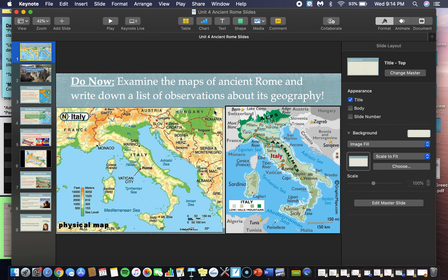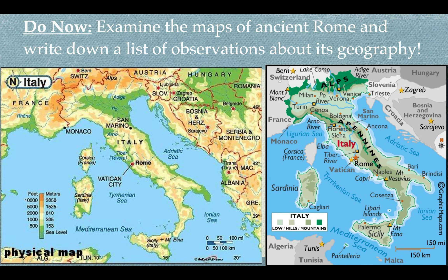Today we are starting our unit on ancient Rome. Before we get started, I want you to take a look at these two maps on the do-now slide. Ancient Rome is our last topic and it is located in a country we call Italy. Italy looks like a boot and it's just west of ancient Greece, which we just talked about — you can actually see Greece on the left map. The ancient Romans are responsible for conquering the ancient Greeks in 146 BCE, and they also built a rather large empire.